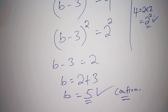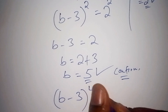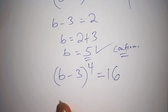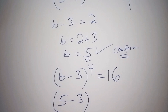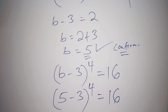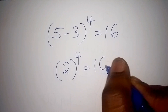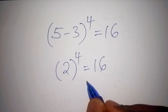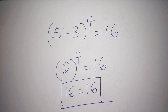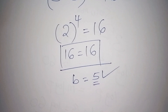Let's confirm our answer. The math problem was B minus 3, bracket to the power of 4, equals 16. Where there is B we now write 5. So we have 5 minus 3, bracket, to the power of 4. Working out inside the bracket first: 5 minus 3 is 2. So 2 to the power of 4, which is 2 multiplied 4 times, gives us 16, which equals 16. Our answer is correct — B equals 5.